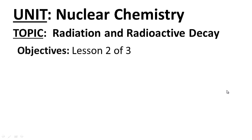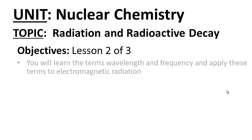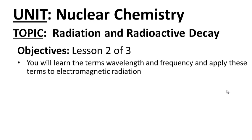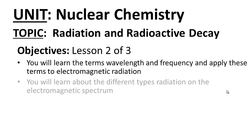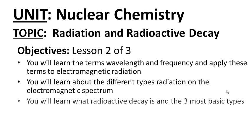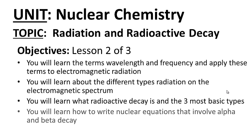Lesson two of three. Your objectives are as follows: you will learn the terms wavelength and frequency and be able to apply these terms to electromagnetic radiation. You will learn about the different types of radiation on the electromagnetic spectrum. You will learn what radioactive decay is and the three most basic types. You will learn how to write nuclear equations that involve alpha and beta decay.